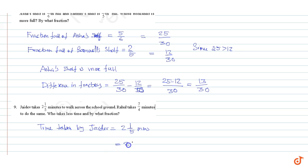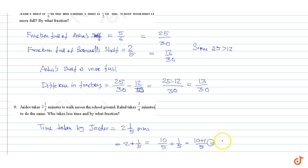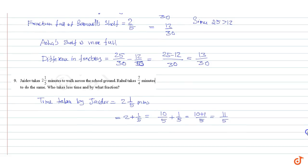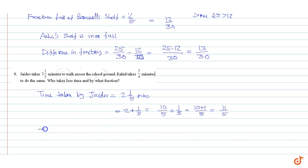Time taken by Jadev equals two plus one by five. Taking LCM as five we get ten by five plus one by five, equal to ten plus one by five, equal to eleven by five. Time taken by Rahul is equal to seven by four minutes.